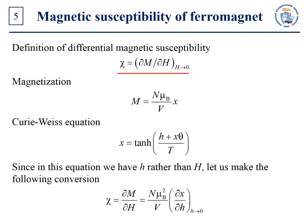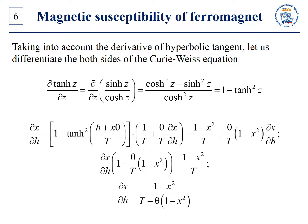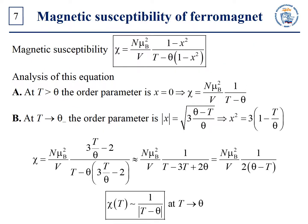Thus, we should find the dependence x(H). It can be found from the Curie-Weiss equation with regard to magnetic field. Since in this equation we have the field in units of energy rather than the traditional magnetic field, let us make the following conversion. Since we do not know the dependence x(H) explicitly, let us differentiate both sides of the Curie-Weiss equation, taking into account the derivative of the hyperbolic tangent. Therefore, the expression for chi(T) takes the following form. We should then take the magnetic field to zero, which gives the order parameter as the solution of the Curie-Weiss equation without magnetic field.